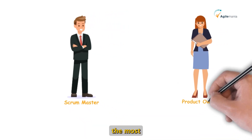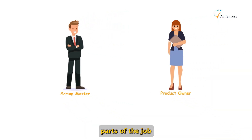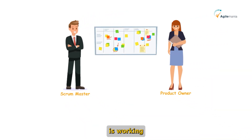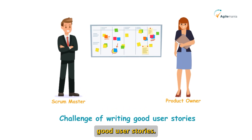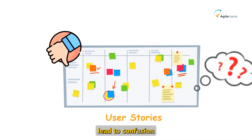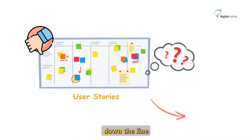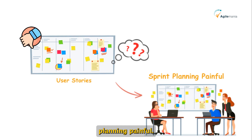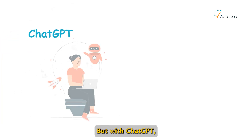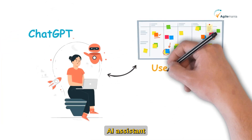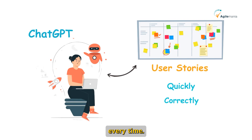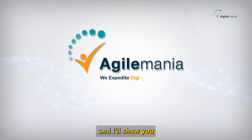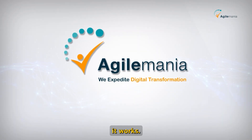As a scrum master, one of the most challenging parts of the job is working with the product owner to write good user stories. Bad user stories lead to confusion down the line and make sprint planning painful. But with ChatGPT, you now have an AI assistant that can help you write user stories quickly and correctly every time. Keep watching and I'll show you exactly how it works.